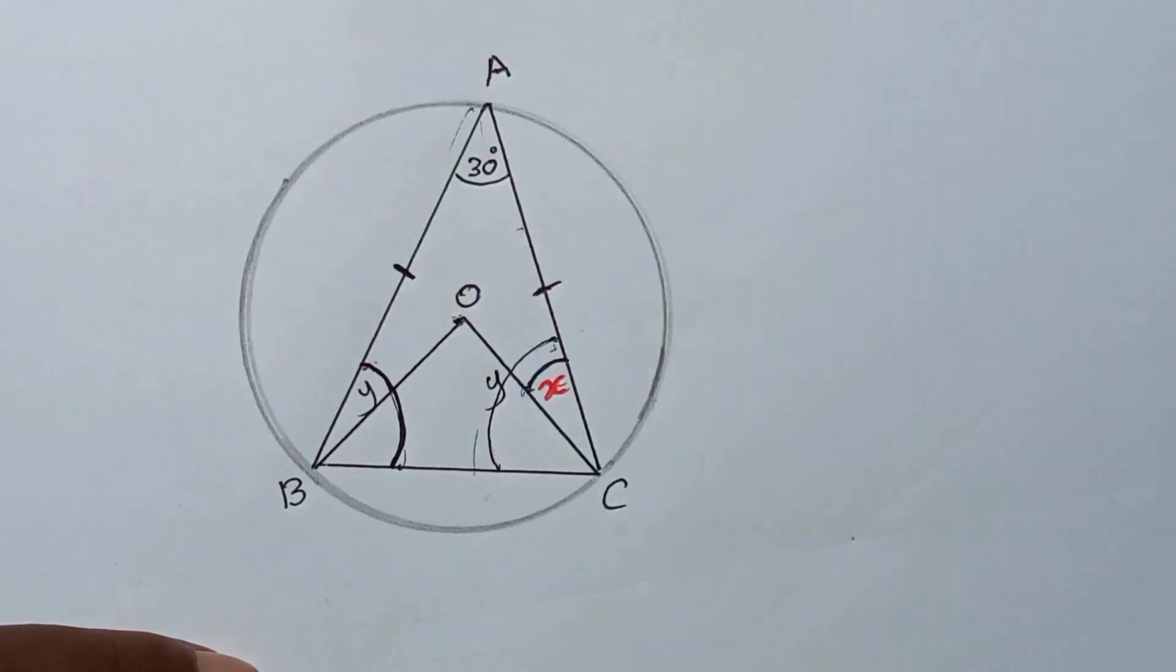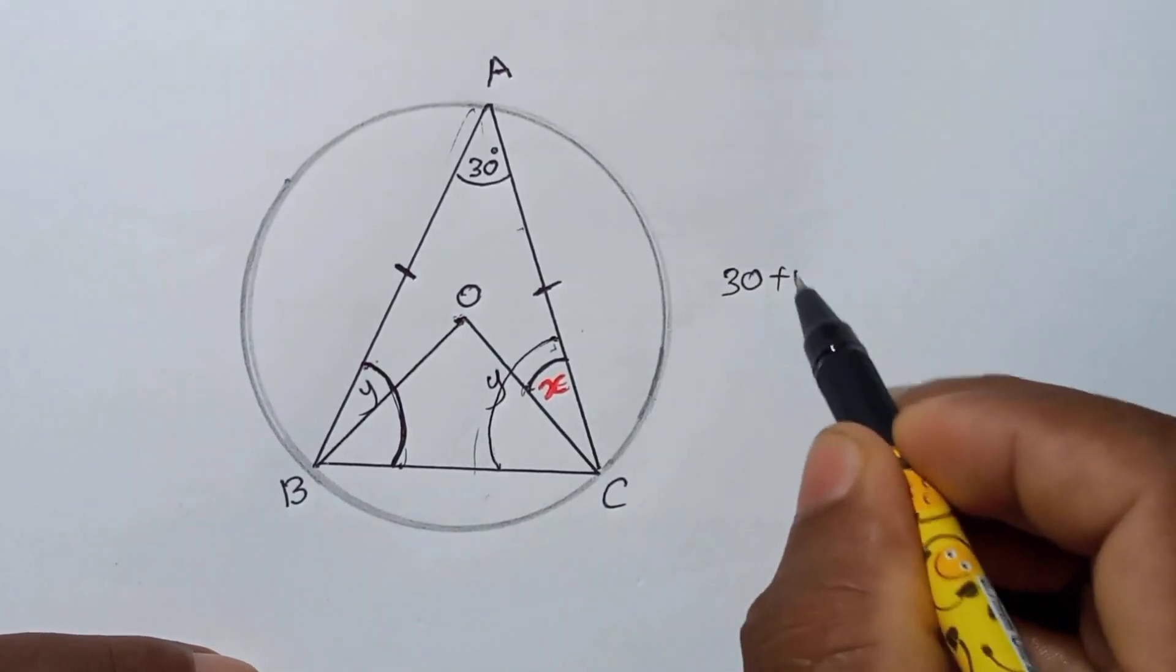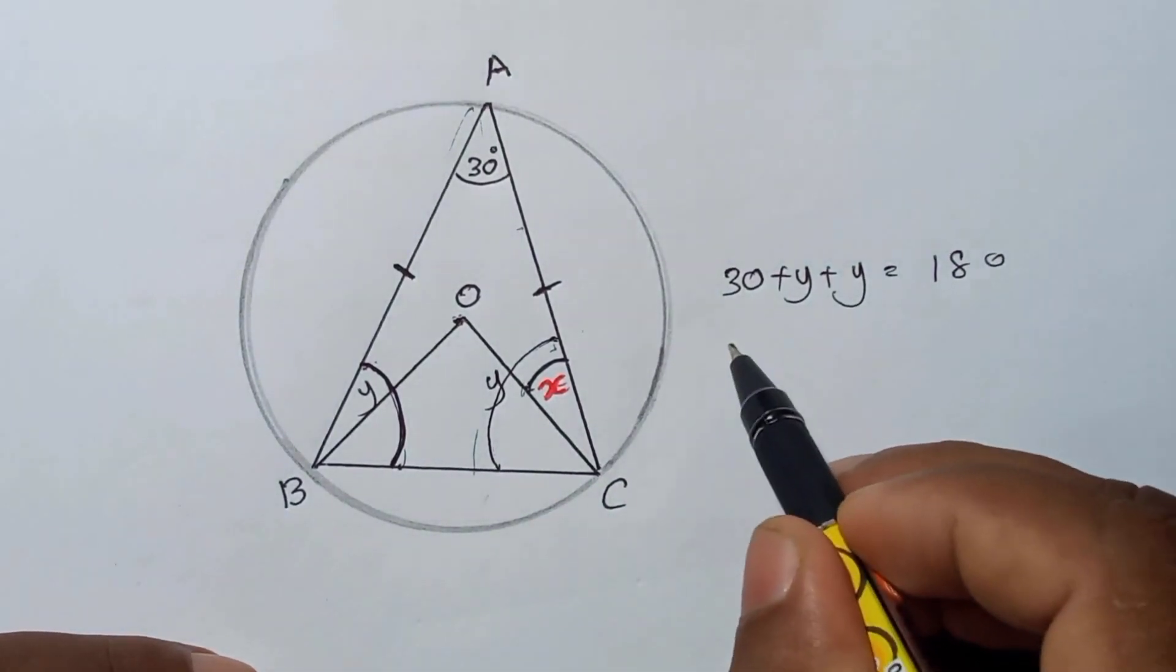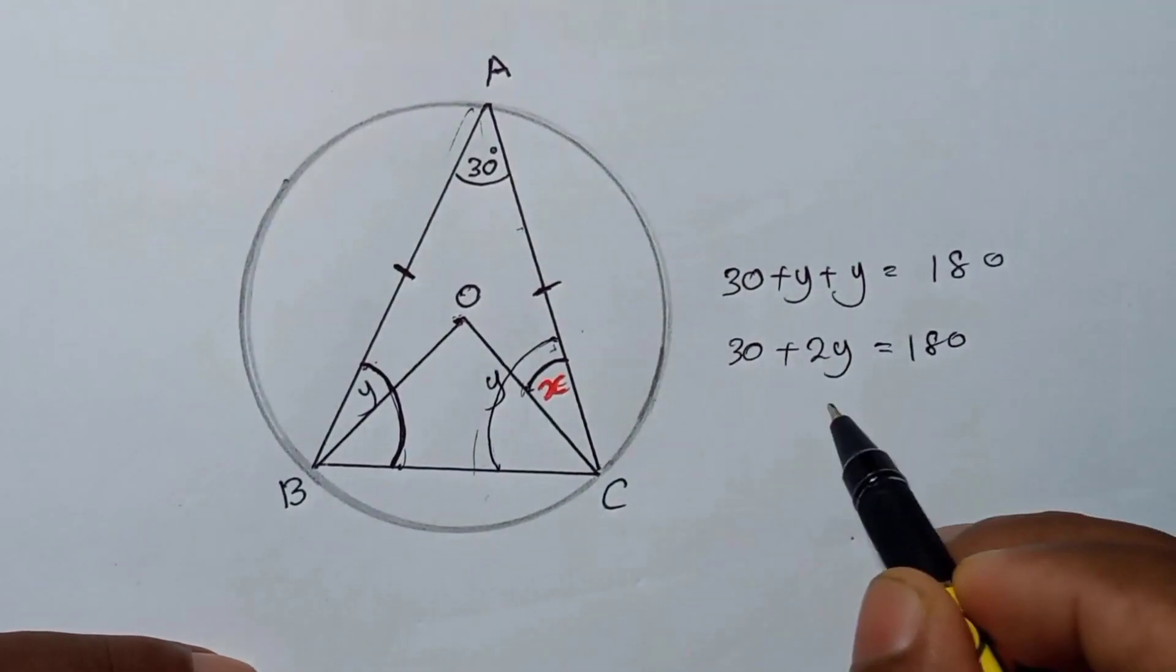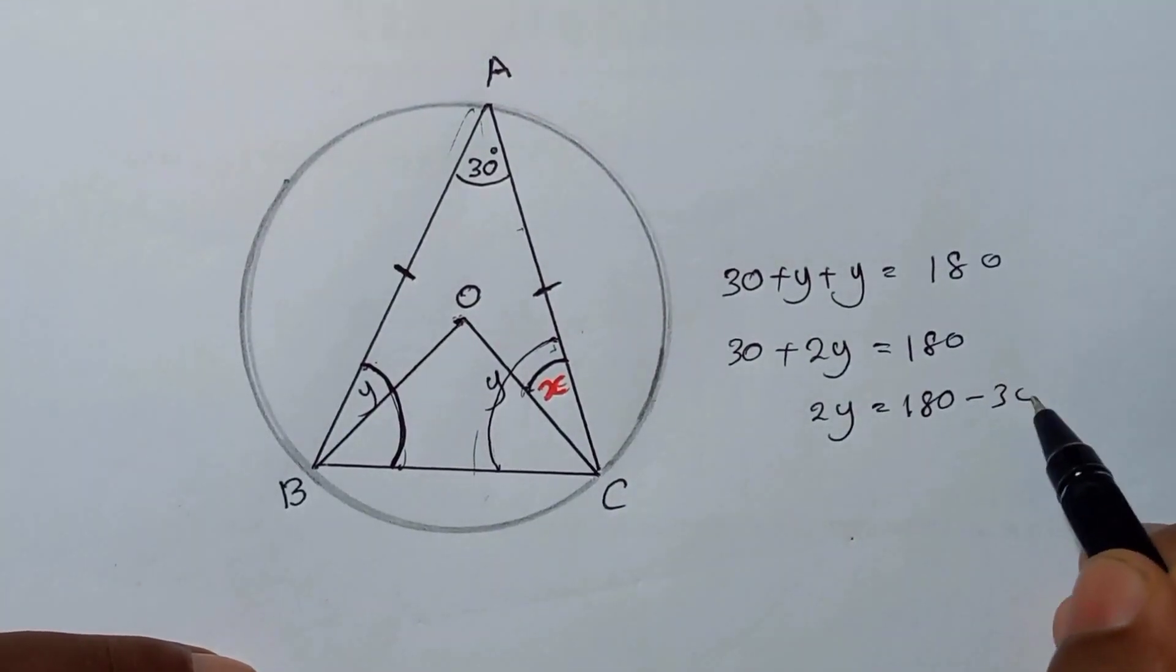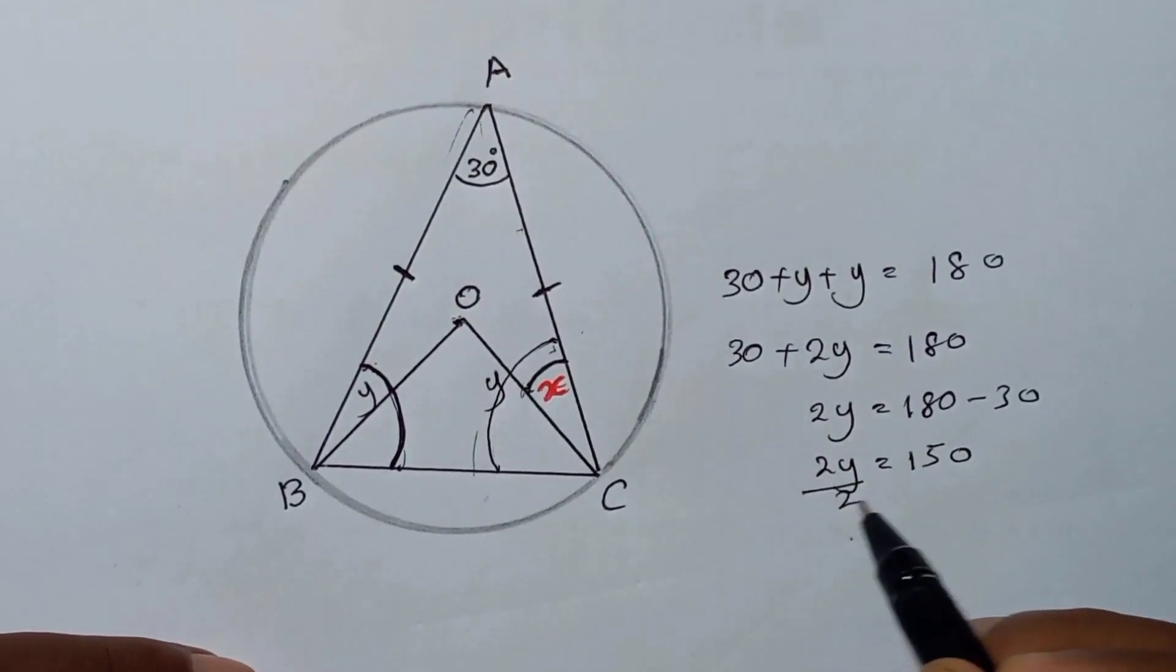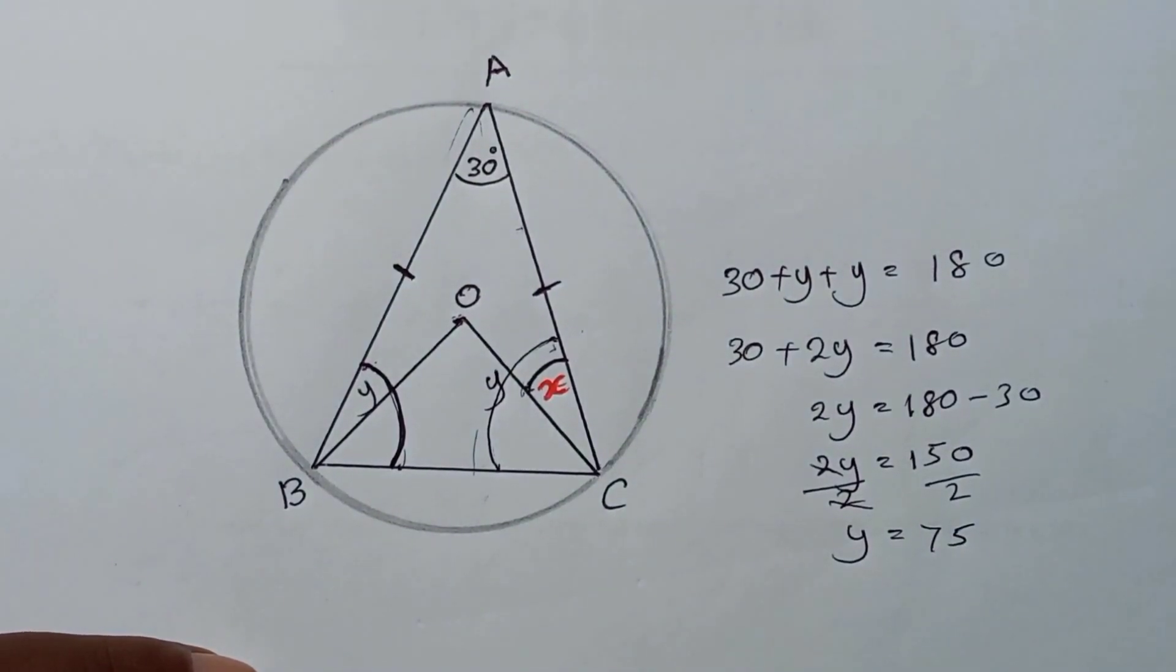We can get the y value very simply. You have to do 30 plus y plus y equals 180. So here will be 30 and here 2y equals 180. Now 2y keep here, 30 into here, so it will be 180 minus 30, so 2y equals 150.